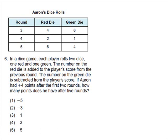In a dice game, each player rolls two dice, one red and one green. The number on the red die is added to your score, where the number on the green die is subtracted.